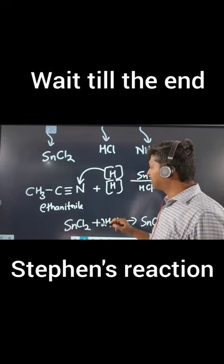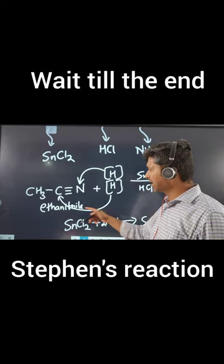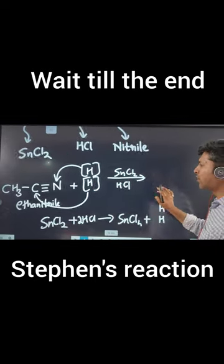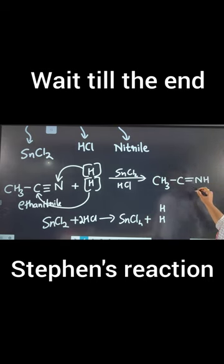These nascent hydrogens are available. Now we add them. We perform an addition reaction. One hydrogen gets added to nitrogen, another to carbon. The triple bond will convert into a double bond. So CH3C double bond N with one H over here and one H over here.